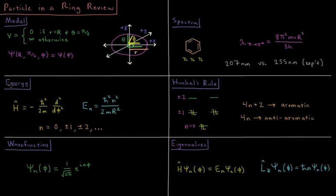The energies of these systems can be determined by solving the Schrodinger equation, where our Hamiltonian is going to reduce to minus h-bar squared over 2m d squared d phi squared.